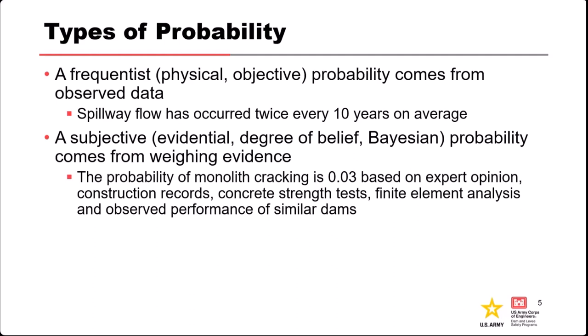A simple example: if we observe that the spillway has discharged twice every 10 years, then our annual probability of spillway flow would be something like 2 over 10, or 0.2.